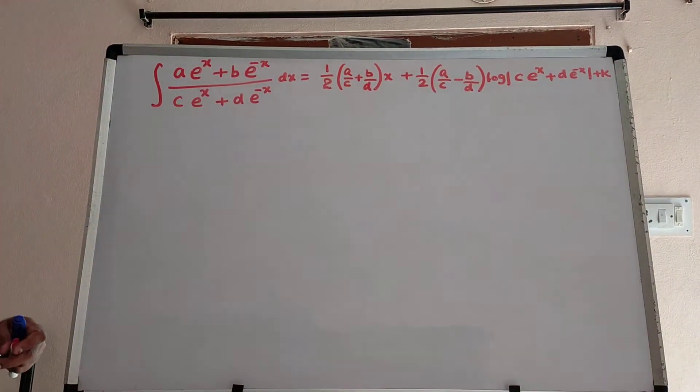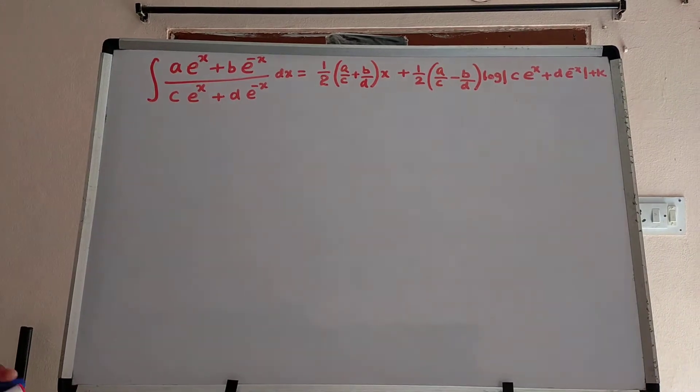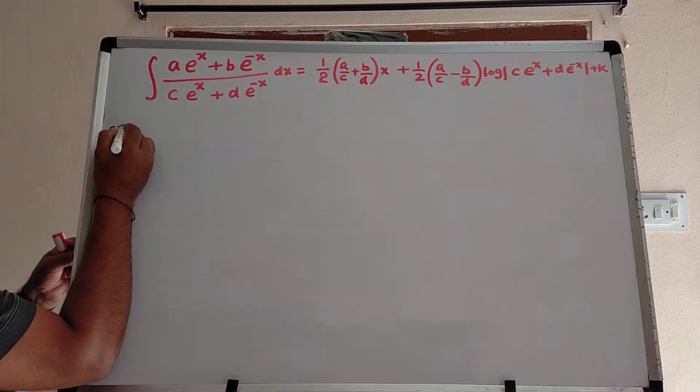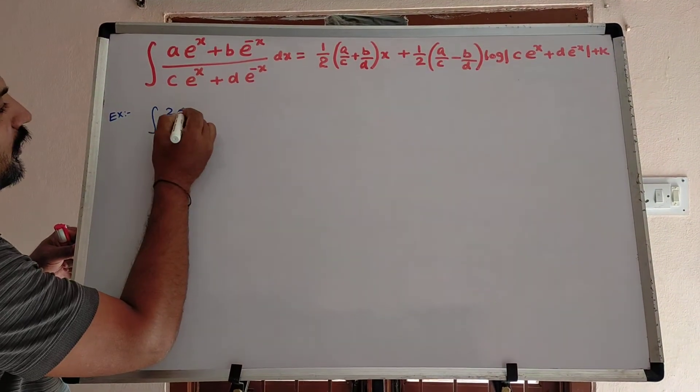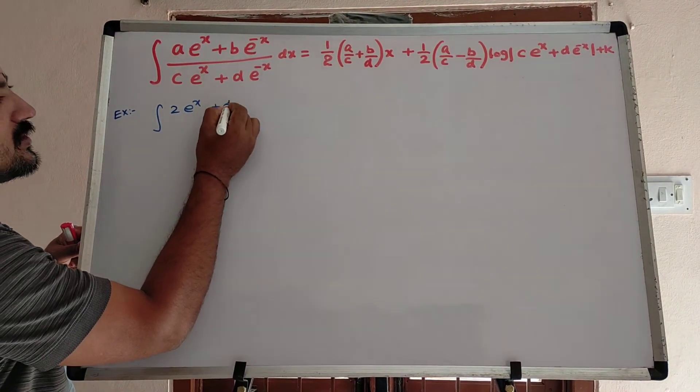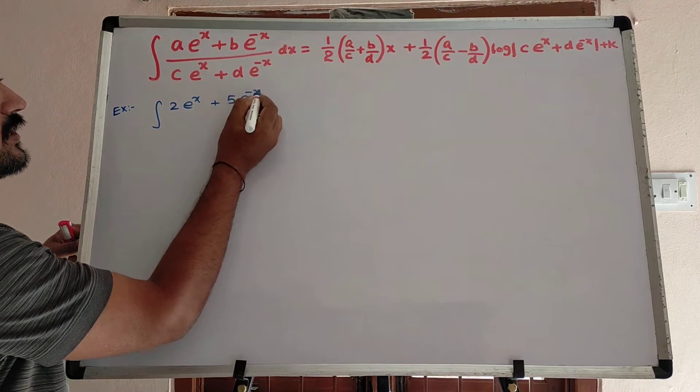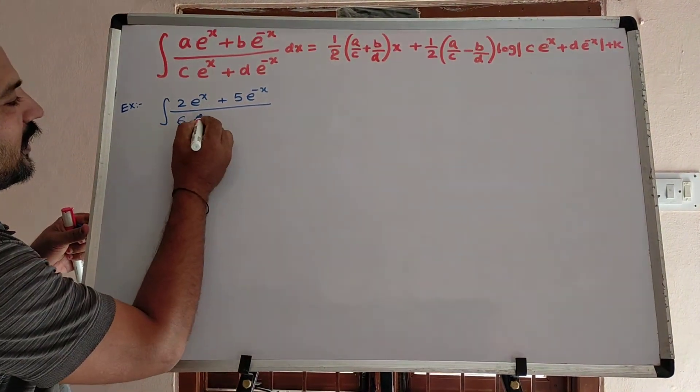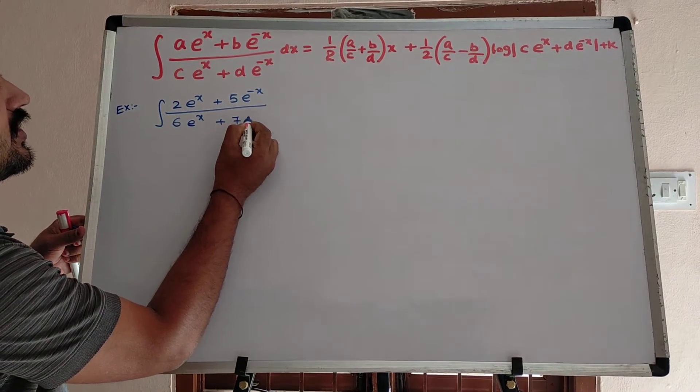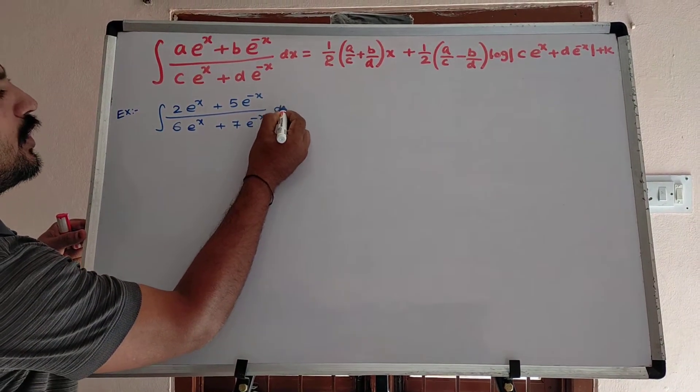Take one example. Integral 2 e power x plus 5 e power minus x divided by 6 e power x plus 7 e power minus x into dx.